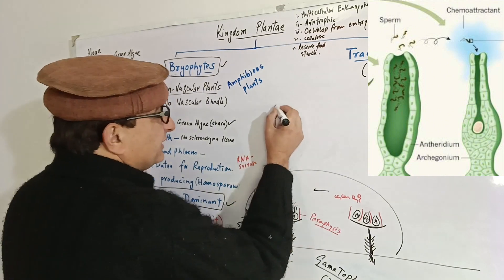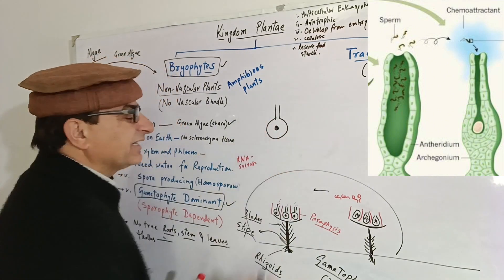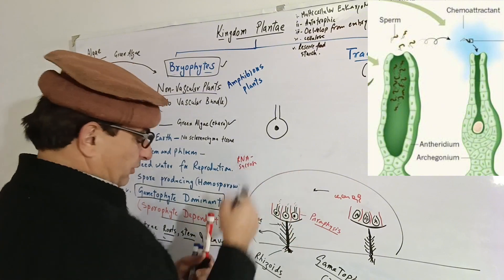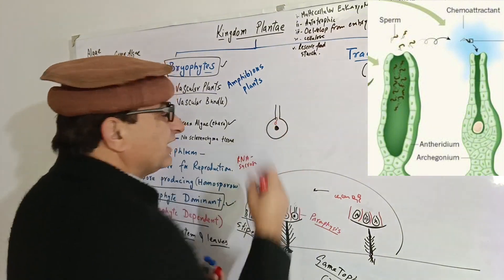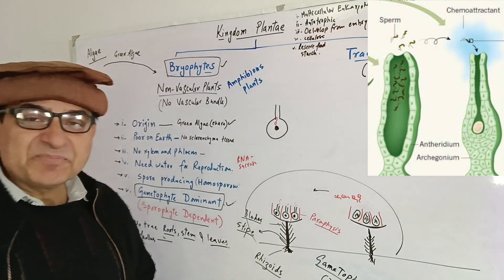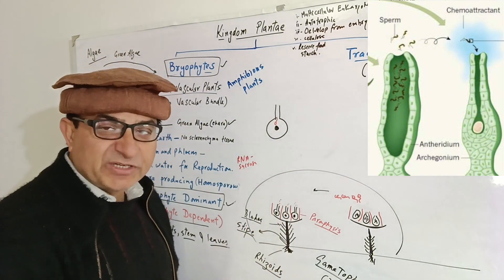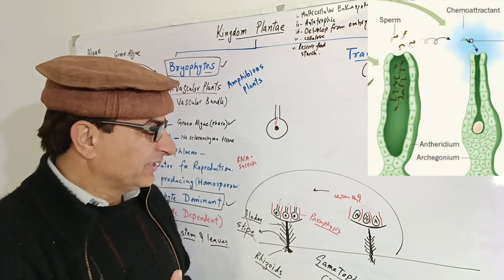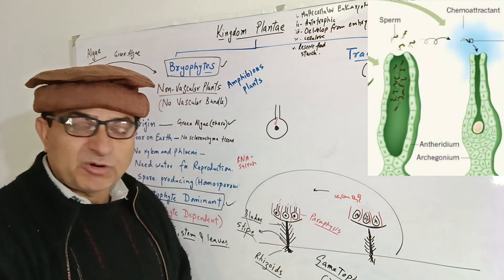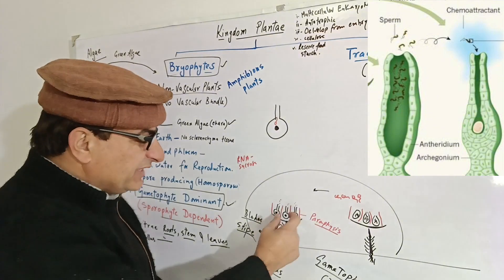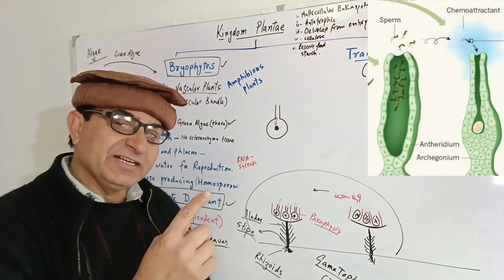The structure of archegonia is a ventral-like structure. The sperm fertilizes the egg inside this structure, and they turn into a zygote. The zygote is protected inside this archegonia — protected within the maternal body. So zygote protection is one of the characteristics present in plants.